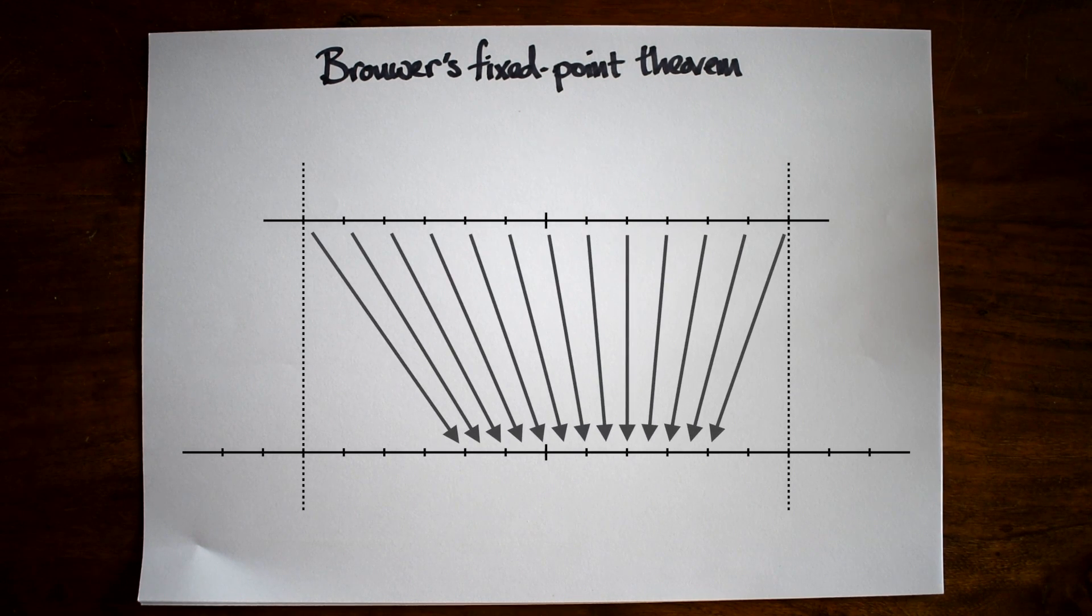We can represent that transformation with arrows. Notice that one of the arrows is vertical, pointing neither left nor right. That corresponds to a fixed point.